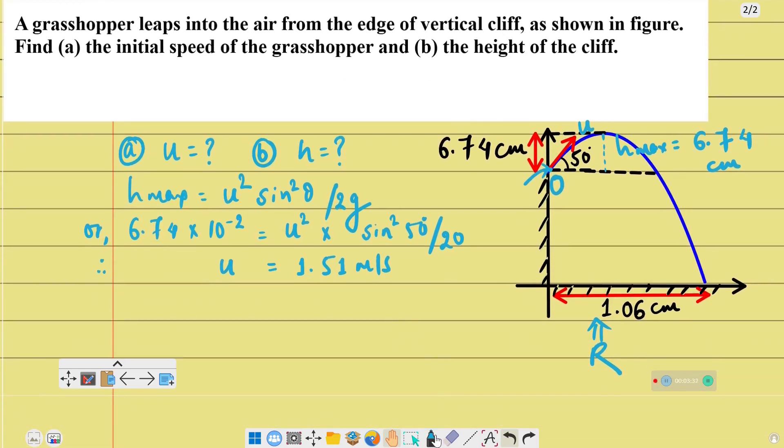Now for the height of the cliff. When the grasshopper is projected from the cliff, this is the initial point and this is the final point. The body is displaced vertically downward from the origin. The origin is here, so downward from the origin is the negative y-axis. So minus h equals to, we use the equation s = ut + ½at².